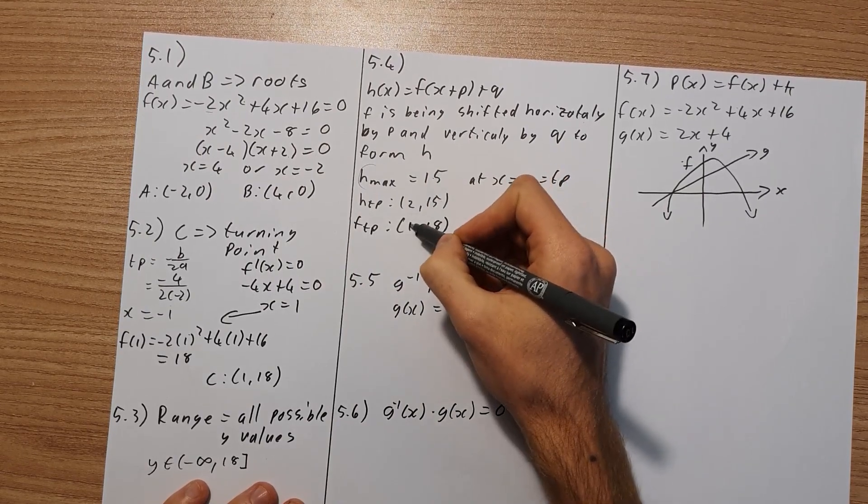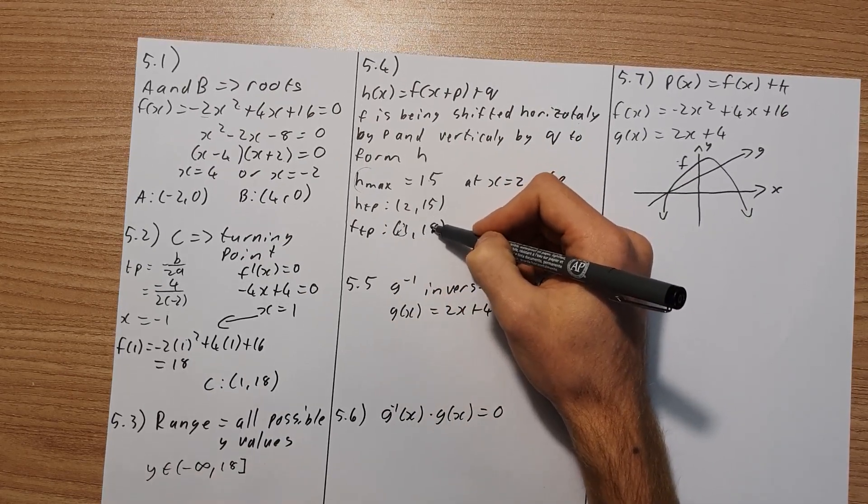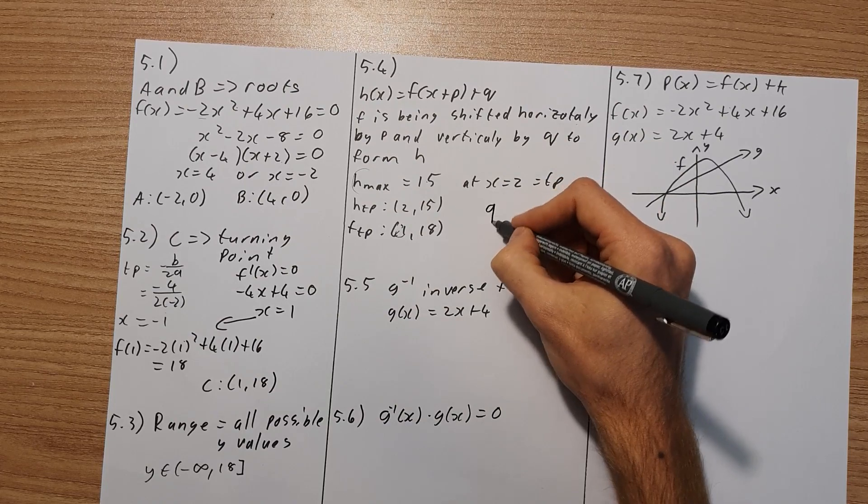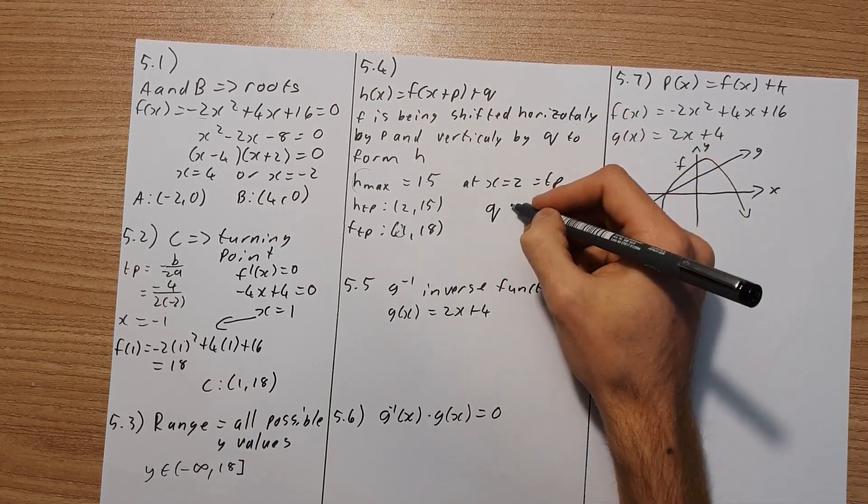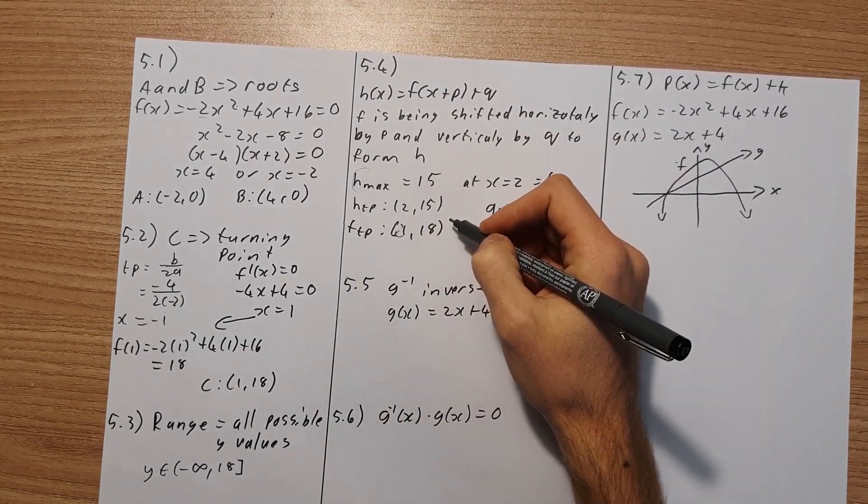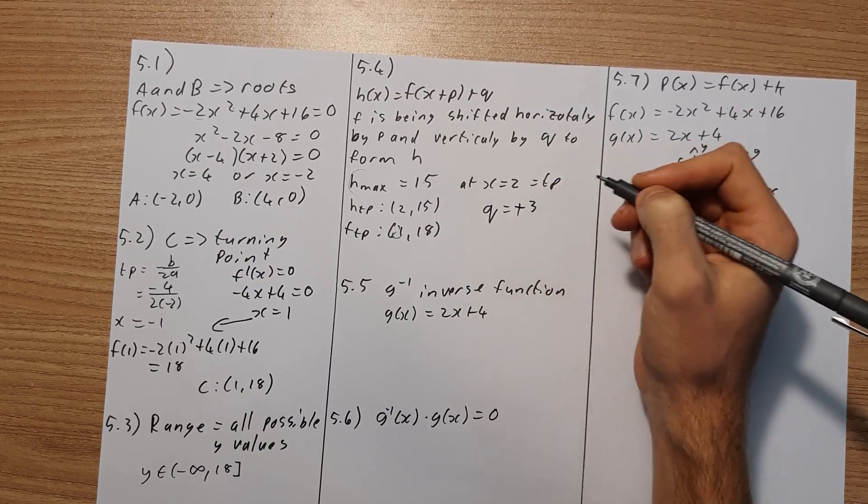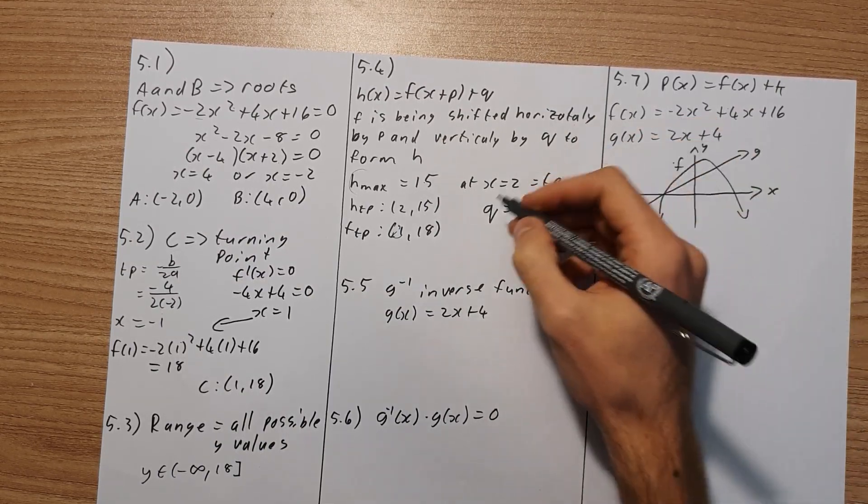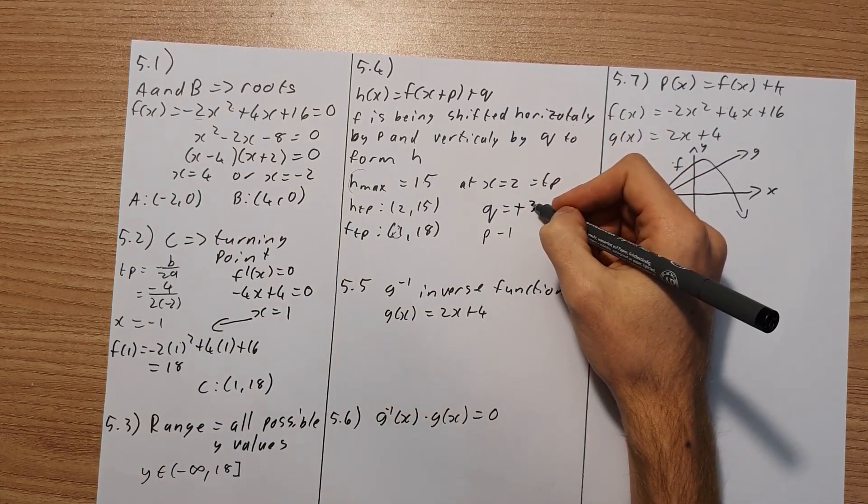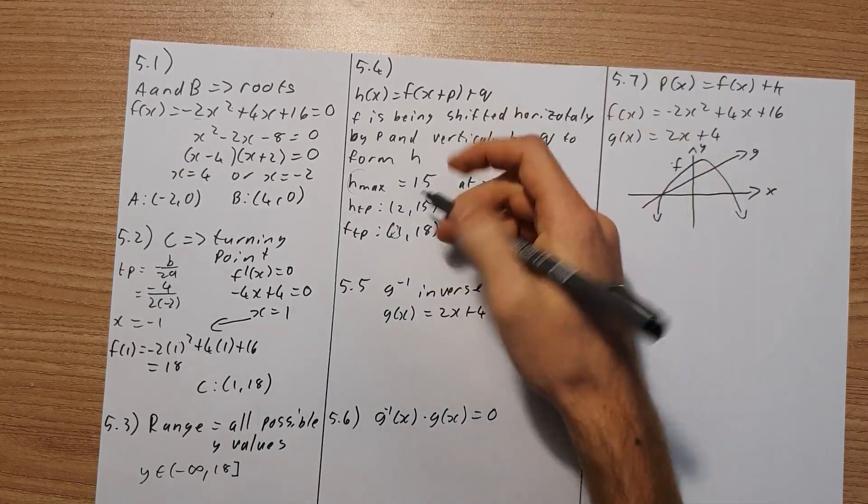So you can see that the graph has shifted. h has shifted one unit to the right because x is increased by 1. And it shifted down 3 units because now the maximum is at 15. So it's come down. So q represents your y values, and that's coming down by minus 3 units. And your x values, so q is 3 units, and p is then minus 1 because we've shifted it to the right. Let's just double check that it's come down. So this should actually be minus 3 because we've come down by 3 units.